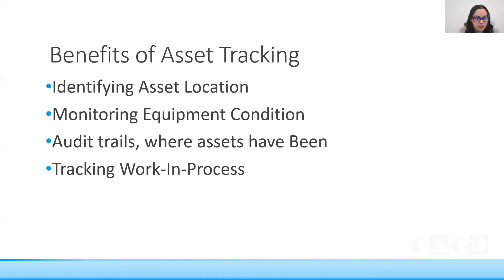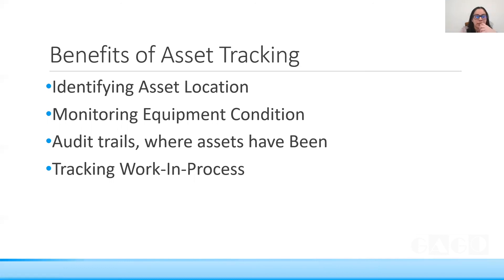The benefits of GIS-based asset tracking include knowing the asset location, achieving real-time monitoring, and supporting audit trails. During an audit, auditors can check in real time whether assets are installed at the specified location — right from the database or tool — making audits faster and easier. Tracking work in progress is also possible, since field data can be loaded into the system as and when an asset is installed.